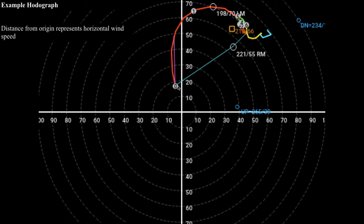What you do is start at the lowest level in the atmosphere, plot the direction and speed, then go to the next level that you have data for, plot the direction and speed, and continue that process until you get to the top of the troposphere, and then simply connect the dots. Starting with the point marked zero, which is at the surface, as we go up in the atmosphere and move along this line, we're going to a higher level in the atmosphere.